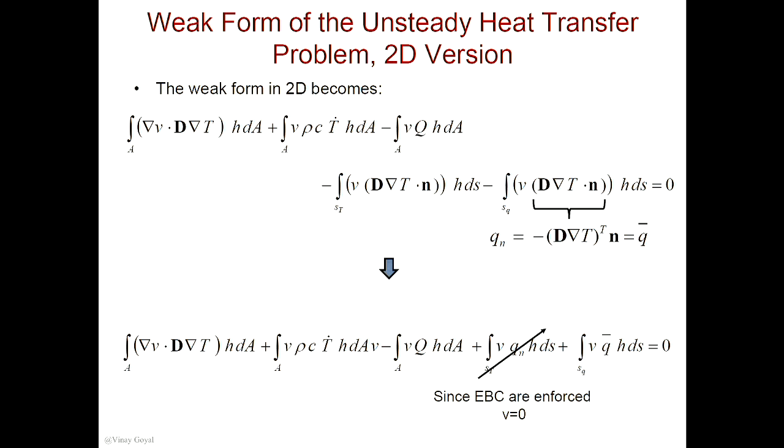So if you go back to the 1D problems that we did in weak form Galerkin for those — because the basis function vanishes at the locations where essential boundary conditions are specified. Since I'm selecting V later on to be my basis functions, and this represents the essential boundary conditions — the part where you specify them — then this will vanish. It will go away. And so what I get here is actually the weak form of the problem.